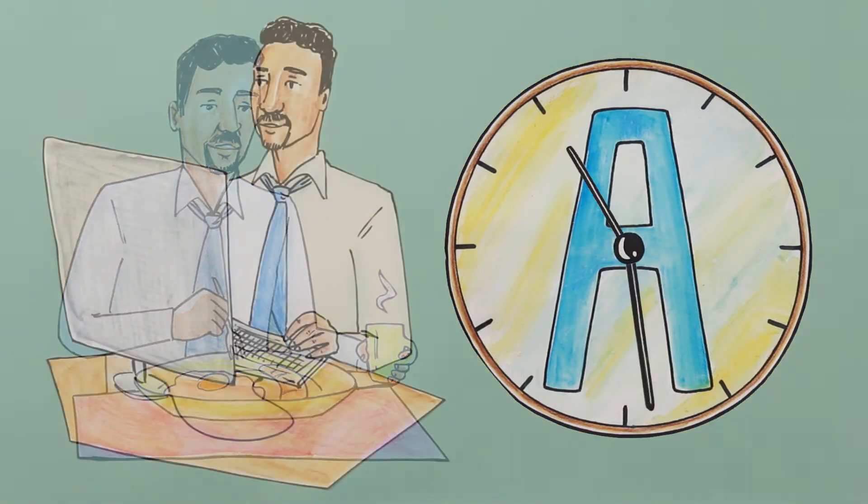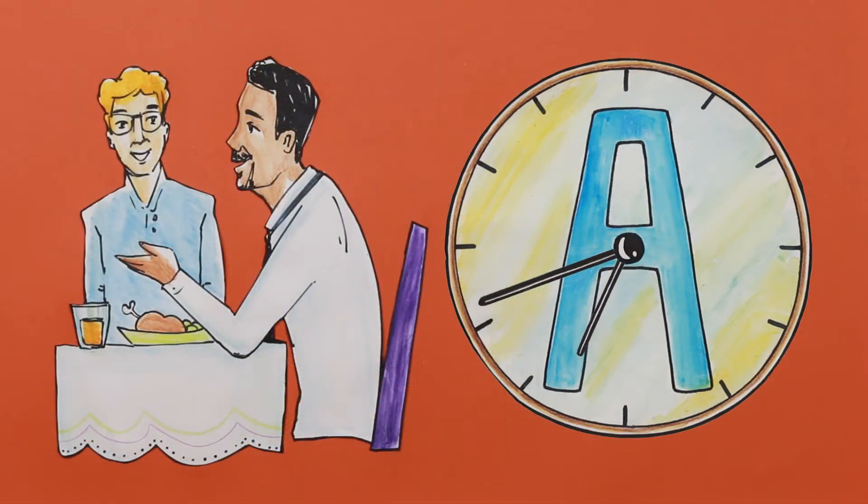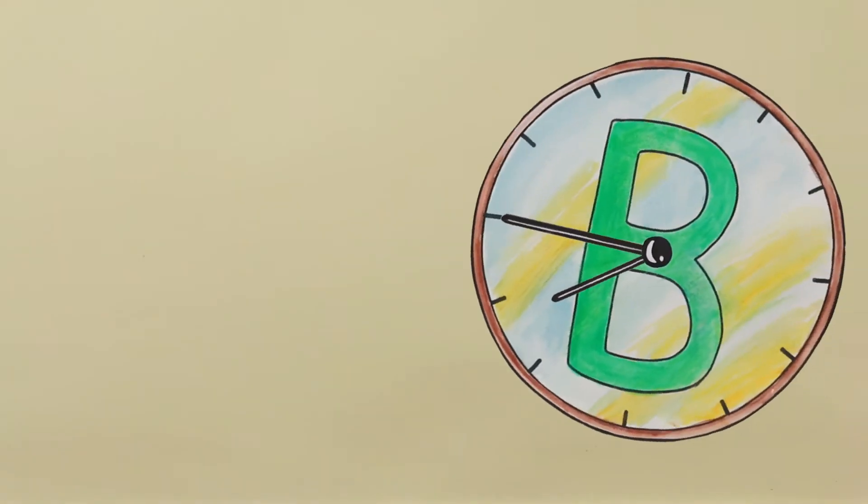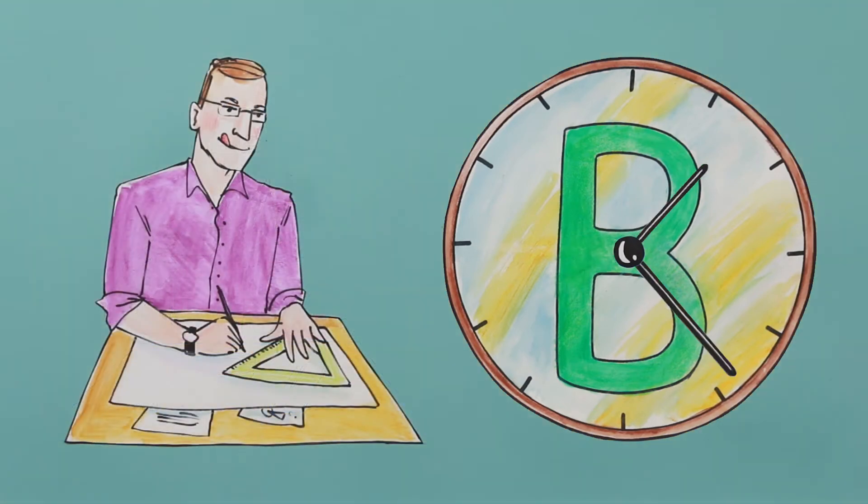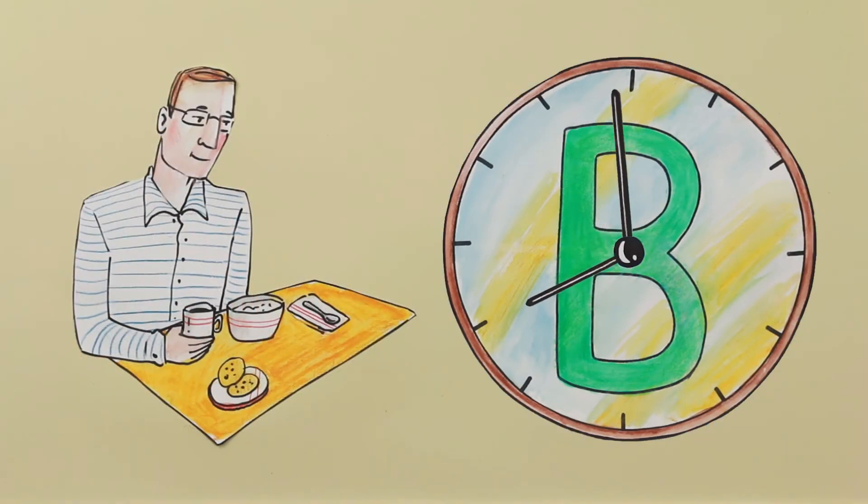For standard factor 8 treatments, the level of factor 8 in the blood would have dropped by half around 8-12 hours after an infusion. Factor 9 stays in the blood a little longer. After an infusion, it takes about 19-24 hours for a standard dose of factor 9 in the blood to fall by half.